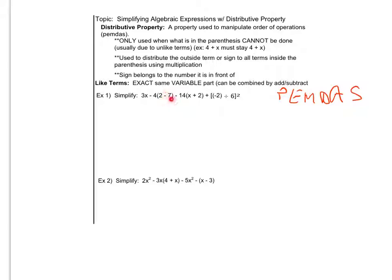So I'm looking here and I see that I can do 2 minus 7. 2 minus 7 is negative 5. I cannot do x plus 2. They are not like terms. And then looking inside these brackets here, I can do negative 2 divided by 6. I can rewrite that as a fraction.